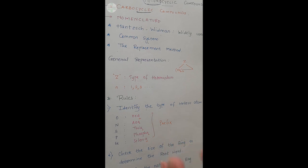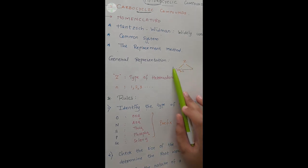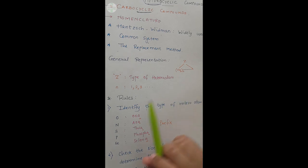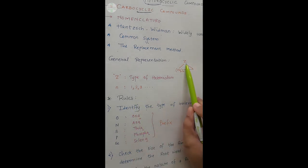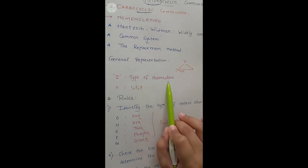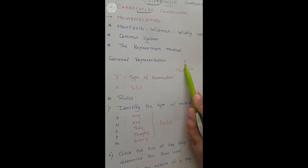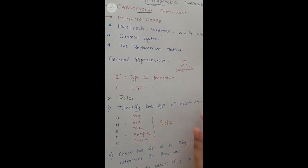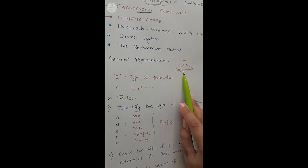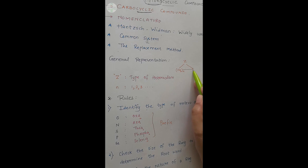Now, suppose if I want to represent a heterocyclic compound in general, then how am I going to do it? This is how we can represent a heterocyclic compound, wherein ये जो Z है वो एक type of hetero atom है. Z के बदले oxygen, nitrogen, sulfur, phosphorus, कोई भी atom हो सकता है. CH2 is N times, और ये जो N है उसका value 1, 2, 3, यानि कि कोई भी whole number होगा. And ये दूसरे end पे भी carbon है, या कोई hetero atom भी हो सकता है.